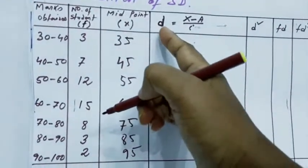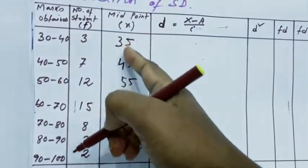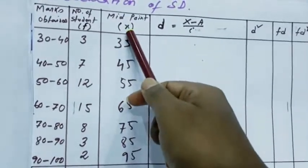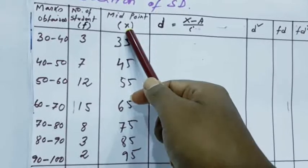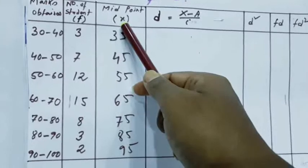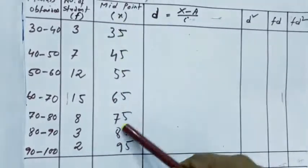Now, D. We take D means X minus assumed mean, assumed mean, any value nearer to mean.